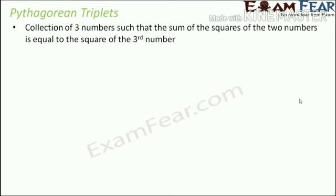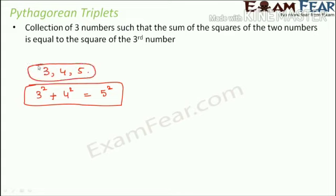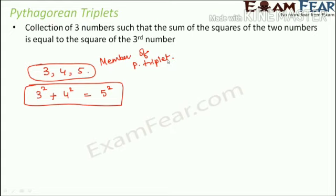Let's take an example. Suppose you have three numbers: 3, 4, and 5. If the square of 3 plus the square of 4 equals the square of 5, then 3, 4, 5 is a Pythagorean triplet. Each number in such a set is called a member of the Pythagorean triplet. So here, 3, 4, and 5 are each members of this Pythagorean triplet.